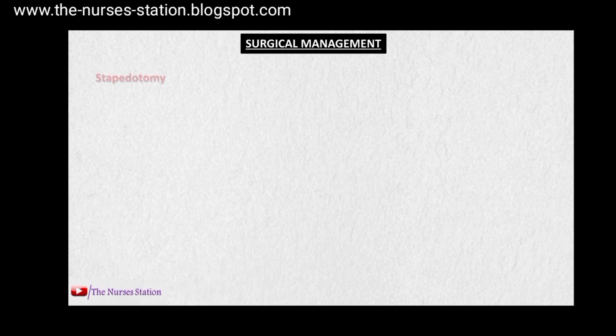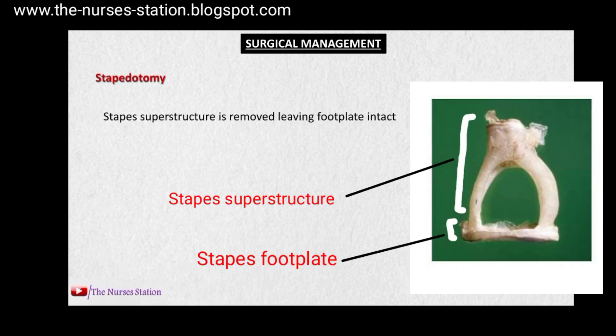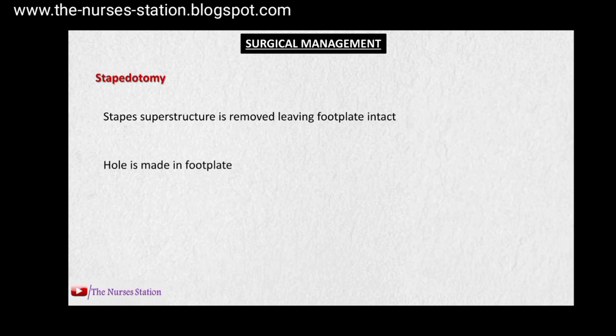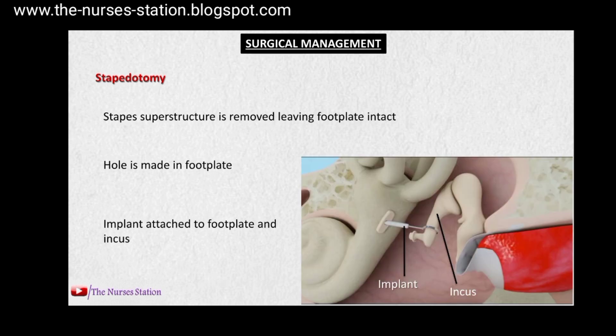Two types of surgeries are performed in otosclerosis. The first is stapedotomy. In this procedure, the stapes superstructure is removed leaving the footplate in its place, and then a small hole is drilled in the footplate. An implant is placed in this small hole and the other end of the implant is connected to the incus, so that vibrations from the incus are transmitted to the inner ear through this implant.